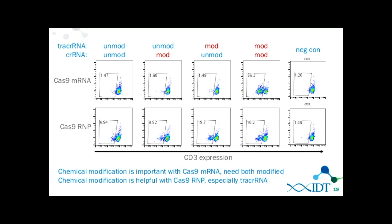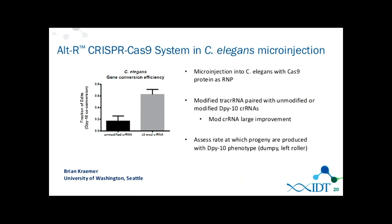When using Cas9 protein, they do see some effect even at slightly suboptimal protein amounts, and the benefit of modification isn't as predominant. We believe this is because with Cas9 mRNA the RNAs have to wait around for the protein to be made and so are more susceptible to degradation. Overall the modification patterns really help improve efficiency, they were able to scale this up to a high-throughput method without needing to remake a new DNA construct every time. In C. elegans, using our two-part system with modified constructs, collaborators also saw much higher gene conversion.